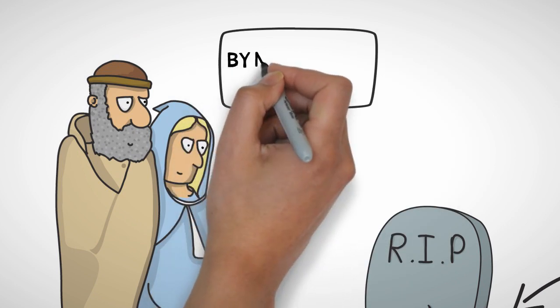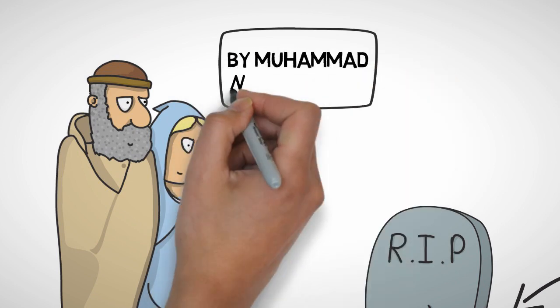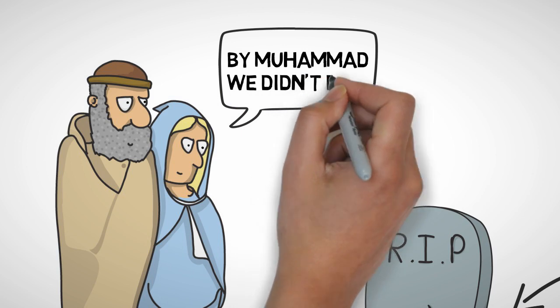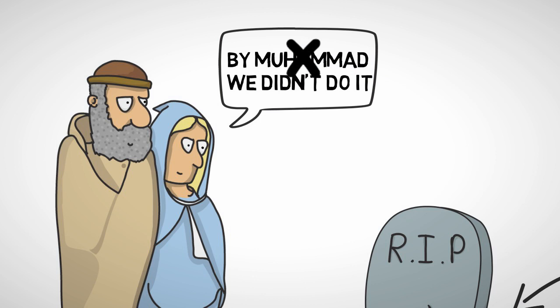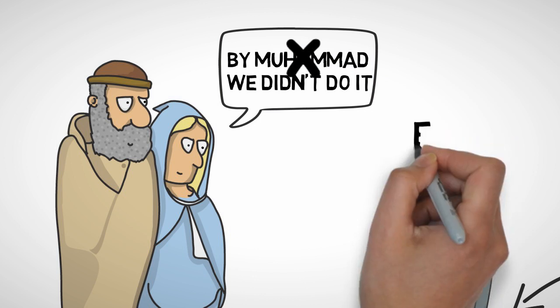And the second type are the ones who swear by other than Allah. For example, they swear by the Prophet. And in Islam, swearing is permissible, but only by the name of Allah, not by the name of Prophet Muhammad. And that's something many people do, especially in Egypt.